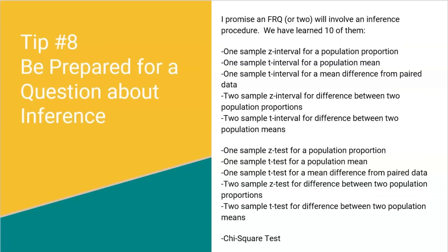Tip number eight: be prepared for a question about inference. I promise that one FRQ or two will involve an inference procedure. There are many inference procedures — intervals, tests, z-tests, one-sample, two-sample, chi-square tests. I have a document called the Book of Inference with examples and procedures for every type. Email me at helpwithapstats@gmail.com if you want it. Don't overlook inference because one or two questions will cover it.